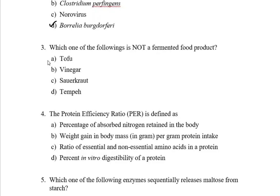But I want to discuss these options. Option B, vinegar: in simple terms, vinegar is a sour tasting liquid made from fruits or grains. Option D, tempeh: tempeh is a traditional fermented food made from soaked and cooked soybeans. Sauerkraut is a fermented product made from cabbage. So these all are fermented food products, but only tofu is not a fermented food product.